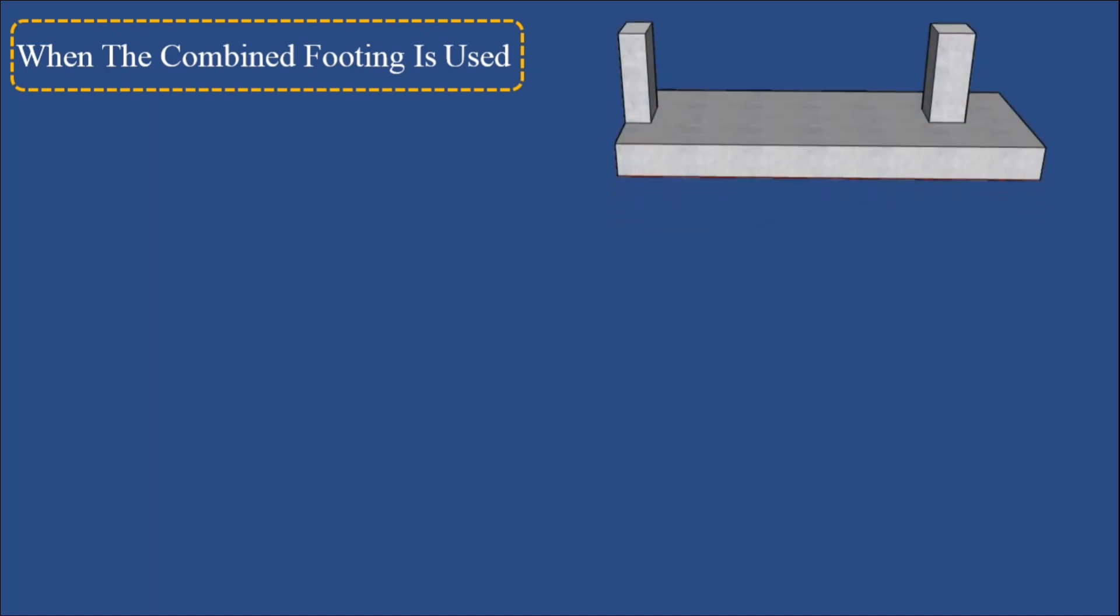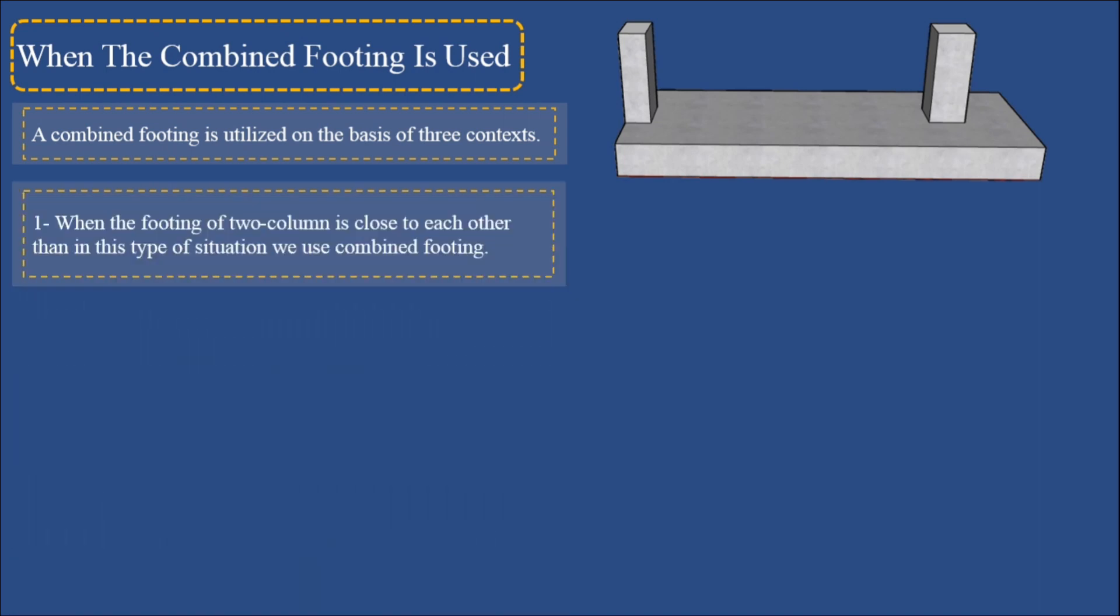When is combined footing used? A combined footing is utilized on the basis of three contexts. One: when the footing of two columns is close to each other, in this type of situation we use combined footing.